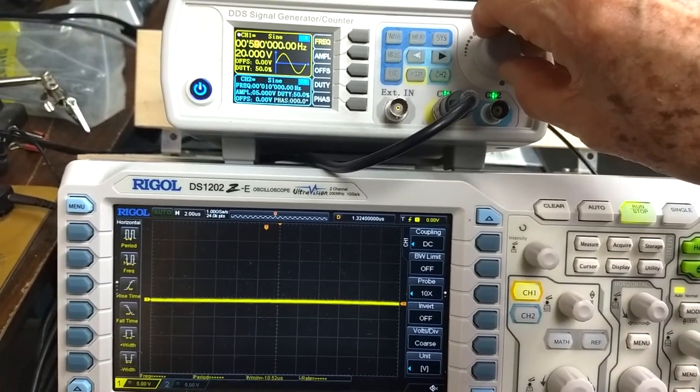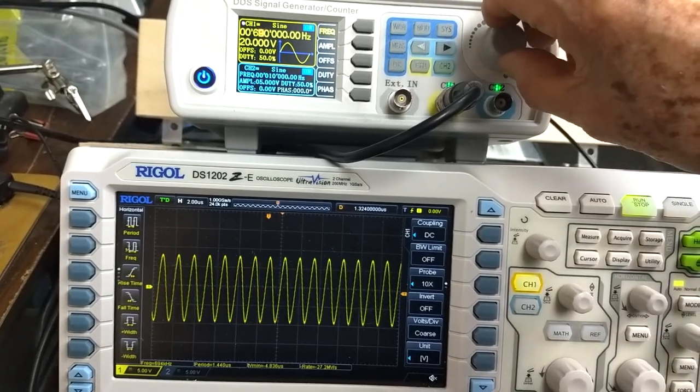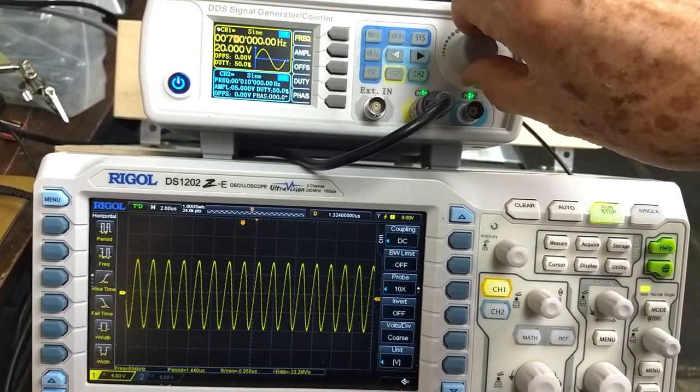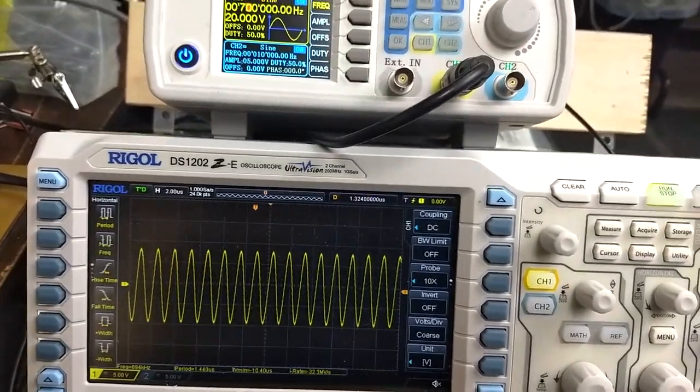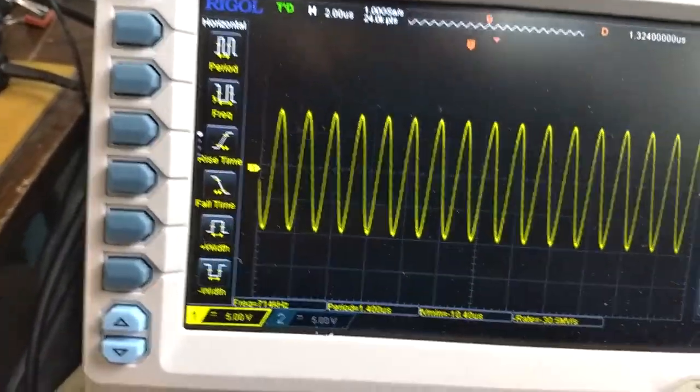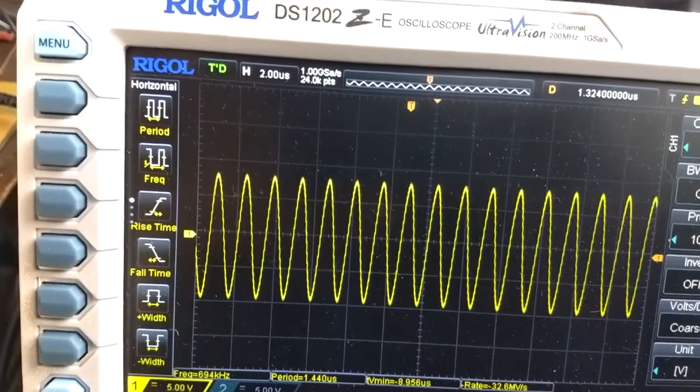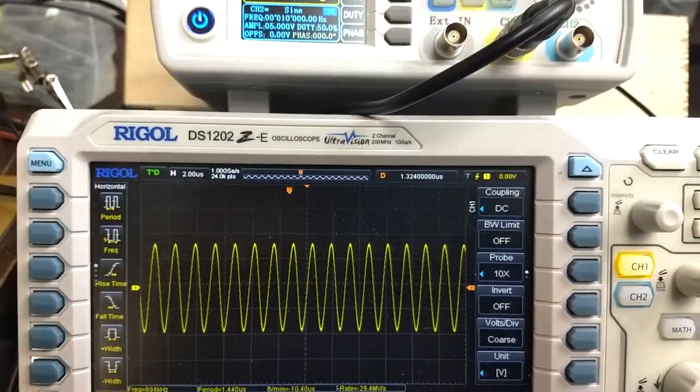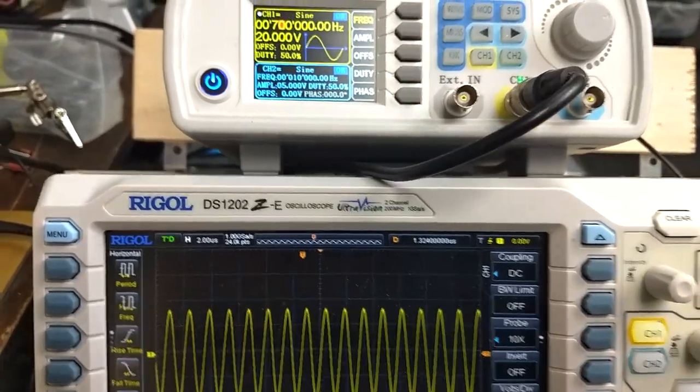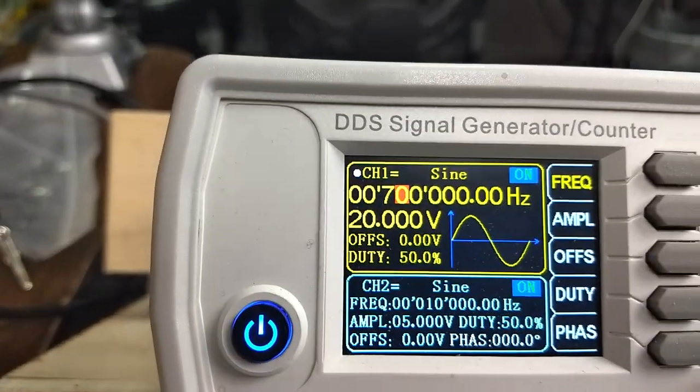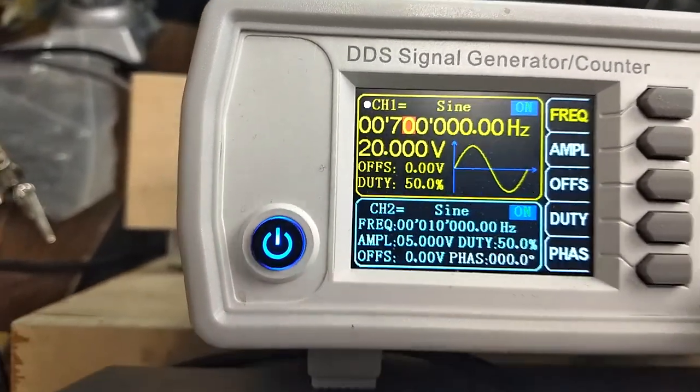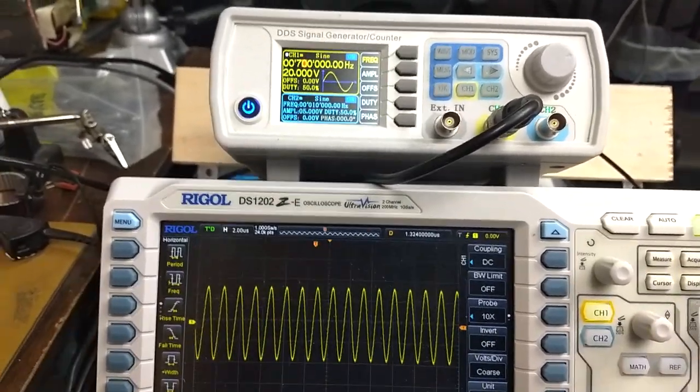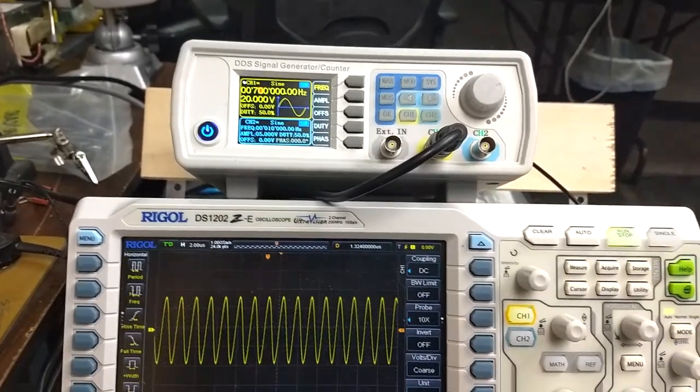We're at our first series resonant frequency. Let's go on up in frequency. We see our signal going up and then back down. So this is a parallel resonance. It's a high impedance. That's about 17 volts peak to peak. There's very little voltage drop across our 20k ohm resistor. That means we're at a high impedance point at 700 kilohertz. I don't think our Slayer oscillator will run at this parallel resonant frequency.